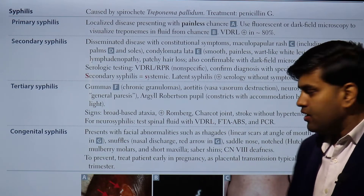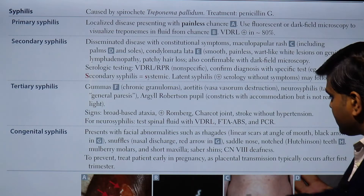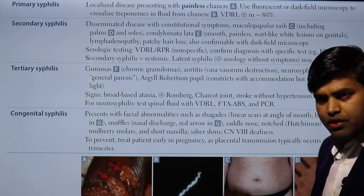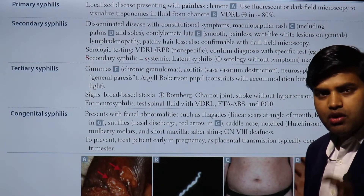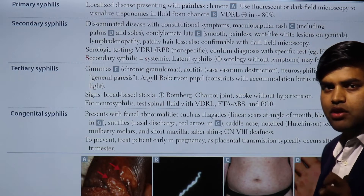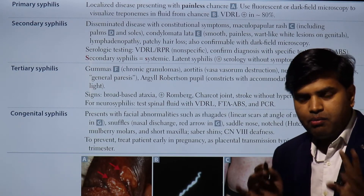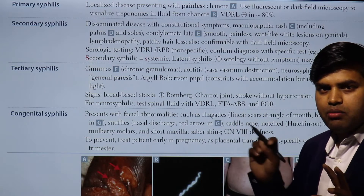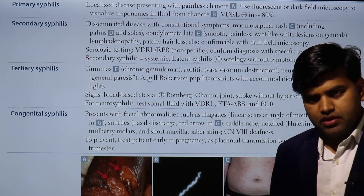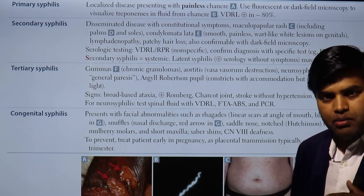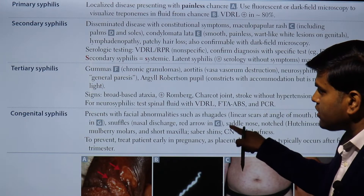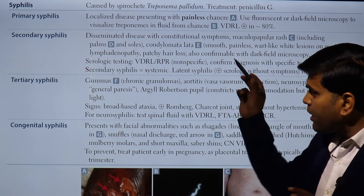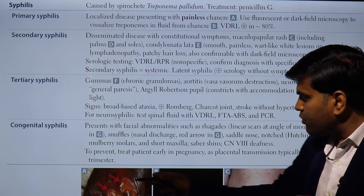Treponema pallidum is a spiral-shaped bacteria. The demonstration of the organism can be done in two forms. From a microbiological point, to diagnose the disease, you need to consider the stage. If it is in the primary stage, there are different stages of the disease.